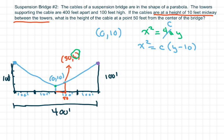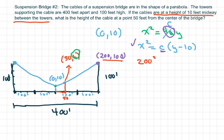This point here is actually (200, 100), so I'm going to go ahead and plug this in to solve for C. The first thing I'm going to do is plug in this known point: 200² equals C times (100 minus 10), so C equals 200 squared over 90.